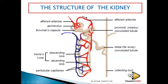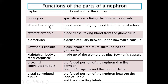The podocytes line the Bowman's capsule. The afferent arteriole brings blood in; it branches from the renal artery. The afferent arteriole is slightly bigger compared to the efferent arteriole. The difference between afferent and efferent arterioles: afferent starts with 'a' and brings blood in, while efferent starts with 'e' and takes blood away from the glomerulus after filtration.